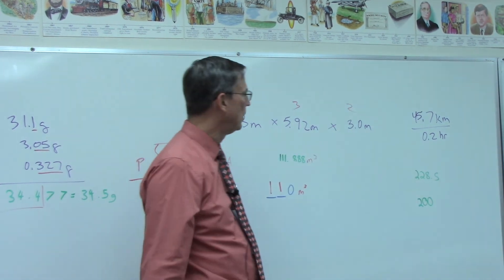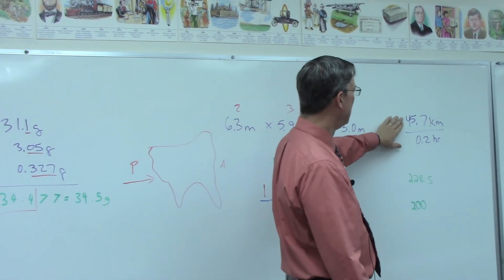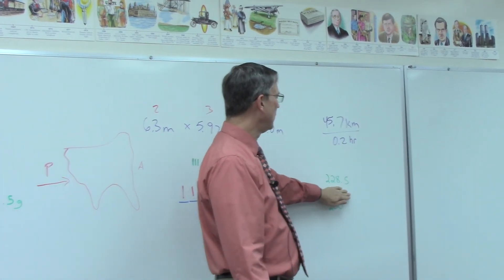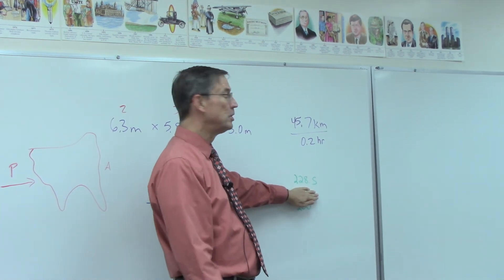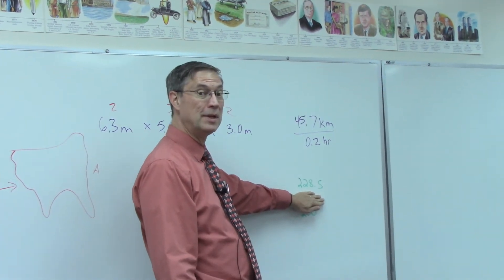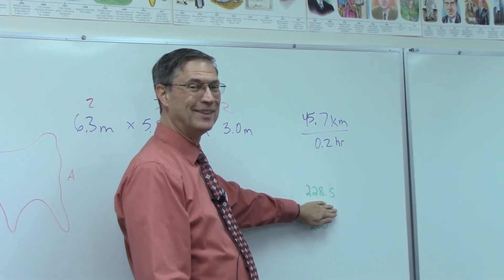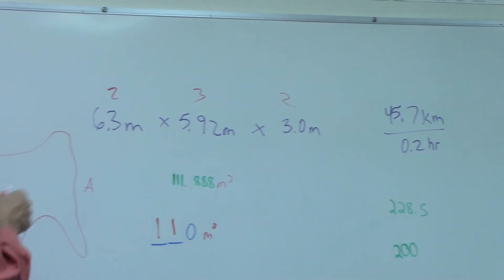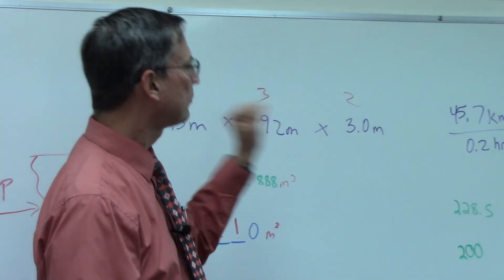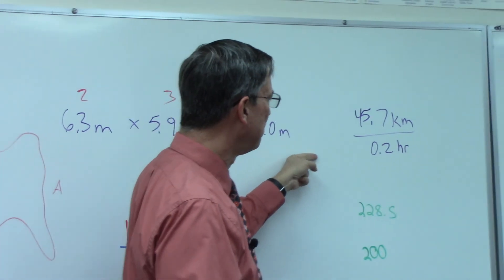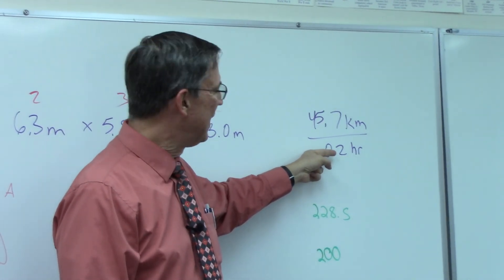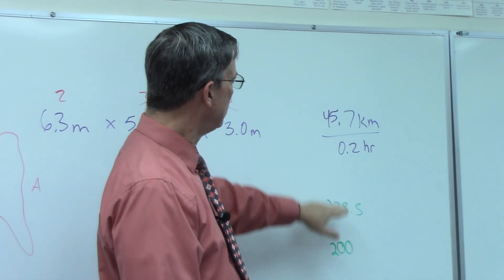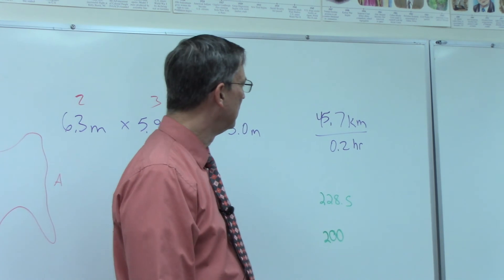Let's do a division problem. Kilometers per hour. We divide, and we get 228.5. How many significant figures in 0.2? Are you thinking two? No, it's not two. Go back to here. Is the decimal present? Yes, it is. So the arrow comes in from the Pacific and pops that balloon, and so I have one significant figure.